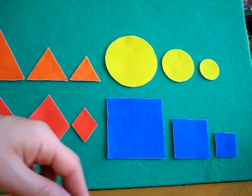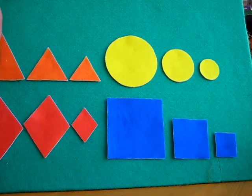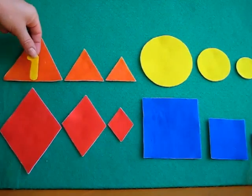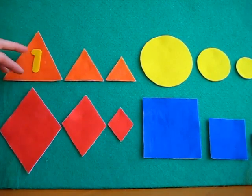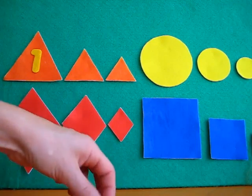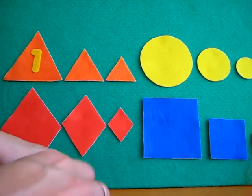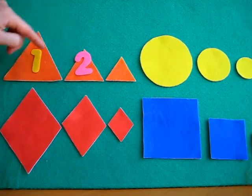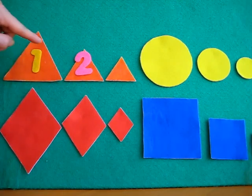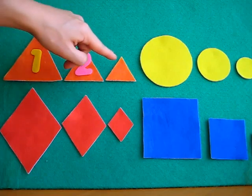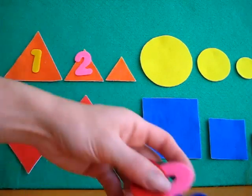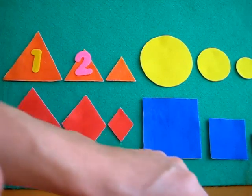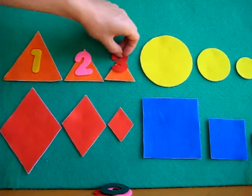Next, you can even add the numbers. Let's count our triangles. Count with me. One. Oh, there's our number one. Then comes number two. There's our number two. How many triangles? One, two, and the smallest one is three. Let's find a number three. Here we go. Number three.